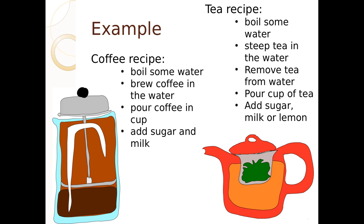Consider these two recipes: a coffee recipe and a tea recipe. Our coffee recipe is: boil some water, brew coffee in the water, pour coffee in a cup, and add milk and sugar. A tea recipe would be: boil some water, steep the tea in the water, remove the tea from the water, and pour a cup of tea and add sugar, milk, and lemon.